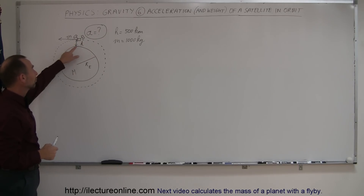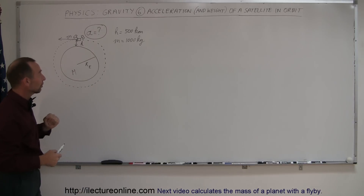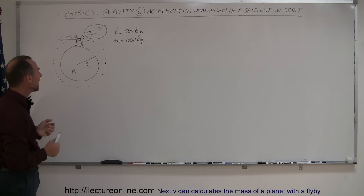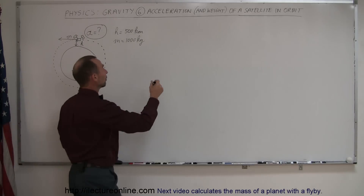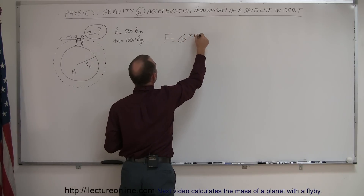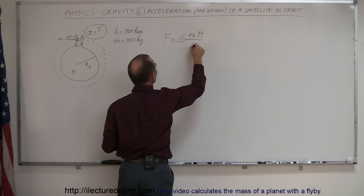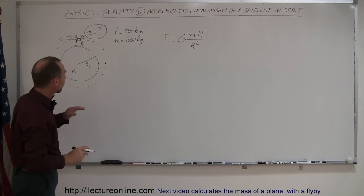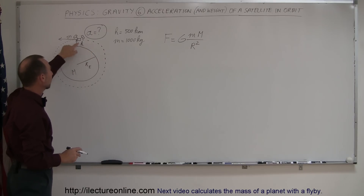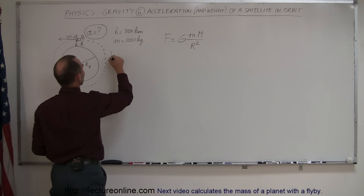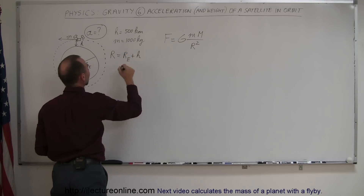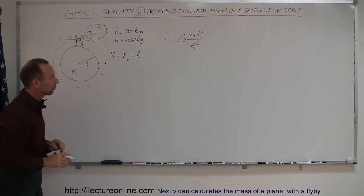If the satellite is 500 kilometers above the surface of the Earth and the mass of the satellite is 1,000 kilograms, what would the acceleration of gravity be at that height? We start with the general equation: F equals G times M times big M divided by the distance squared. The distance between the center of the Earth and the satellite is the radius of the Earth plus H, so the radius of the motion equals the radius of the Earth plus the height of the satellite above the Earth.